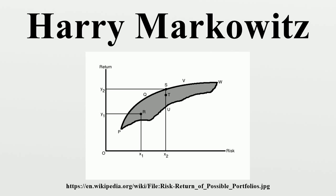As the investor is rational, they would like to have higher return, and as he is risk-averse, he wants to have lower risk. In Figure 1, the shaded area PVWP includes all the possible securities an investor can invest in. The efficient portfolios are the ones that lie on the boundary of PQVW. For example, at risk level X2, there are three portfolios S, T, U. Portfolio S is called the efficient portfolio as it has the highest return Y2 compared to T and U. All portfolios that lie on the boundary of PQVW are efficient portfolios. The boundary PQVW is called the efficient frontier.